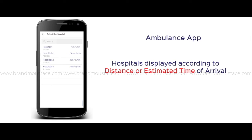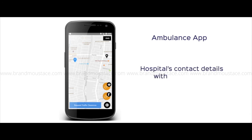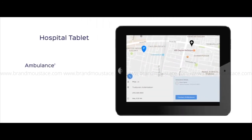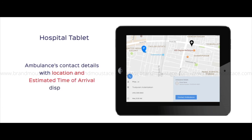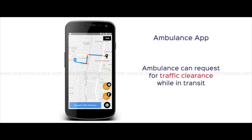Once the paramedic selects the hospital, information of the hospital's location and fastest route to the hospital will be displayed in the ambulance application, while the hospital gets the information of the ambulance's current location and estimated time of arrival. The ambulance can also choose to alert the traffic department to ease traffic and further reduce the time taken to reach the hospital.